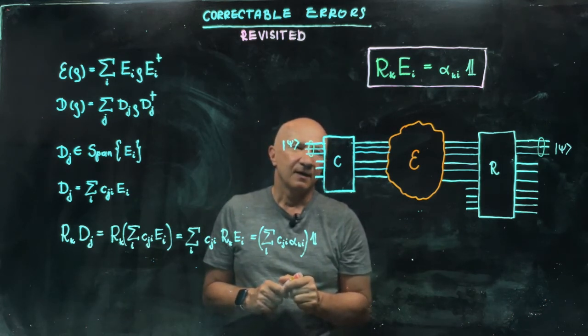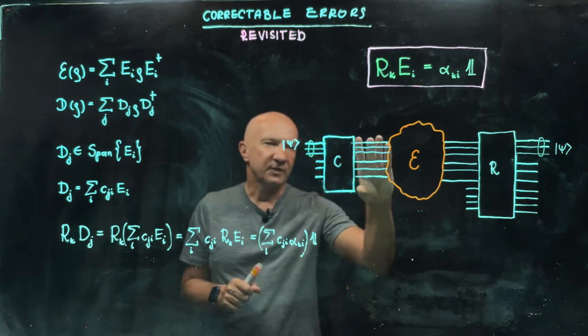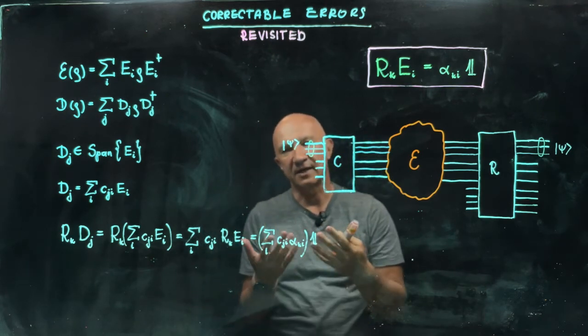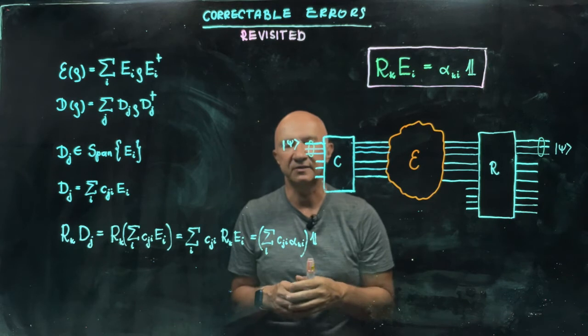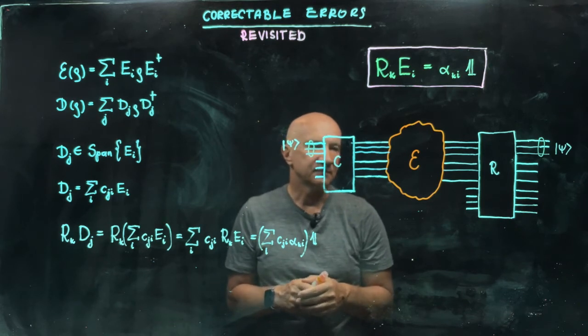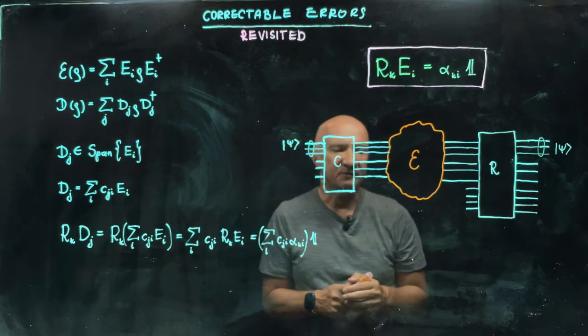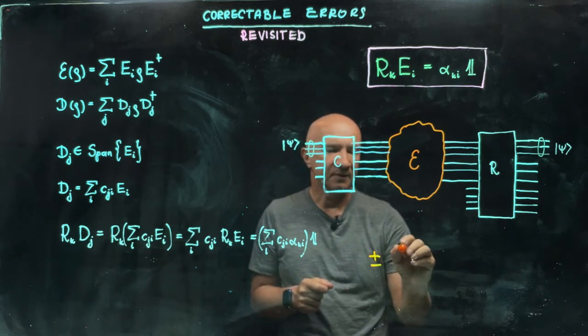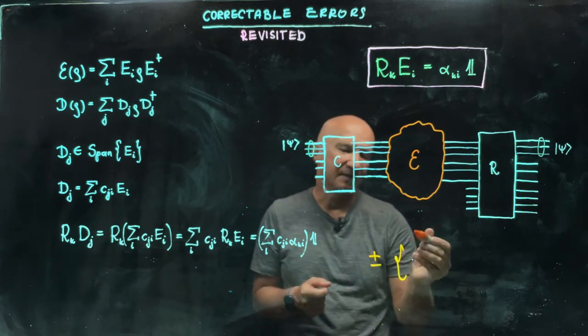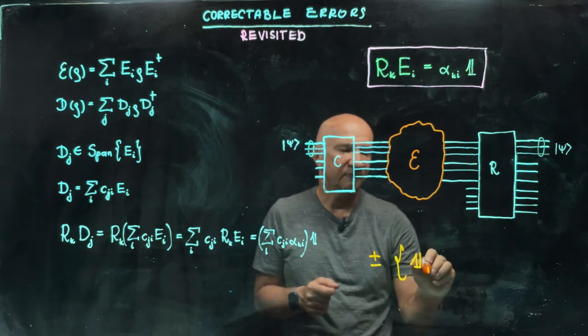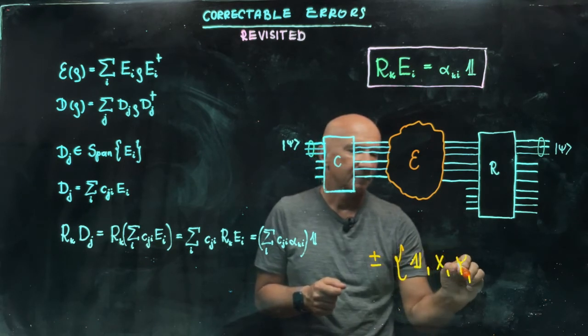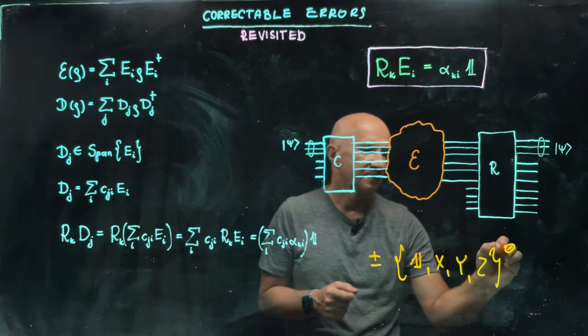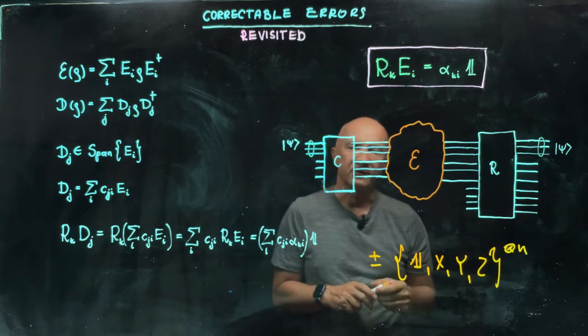And we already saw that we can design circuits that correct for Pauli errors, at least on a single qubit. And Pauli error is defined by the Pauli operators. So that by the Pauli operator, I will mean now the n-fold tensor product of any of the Pauli operators.